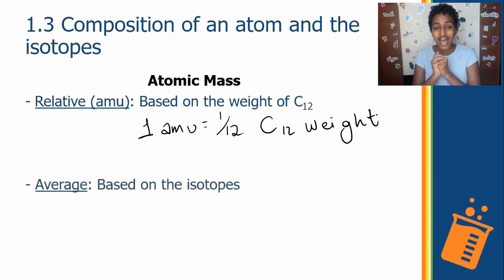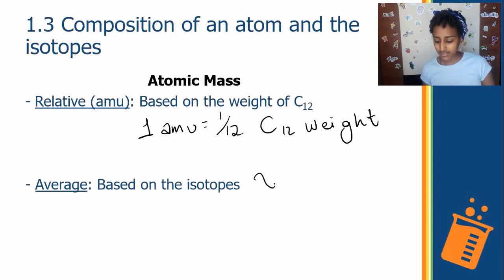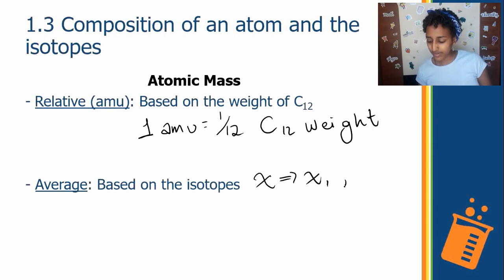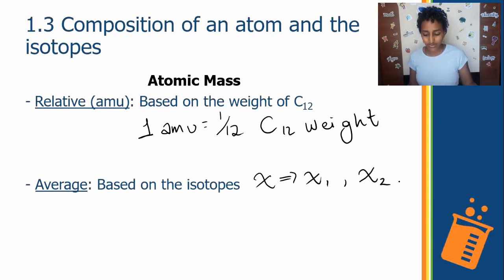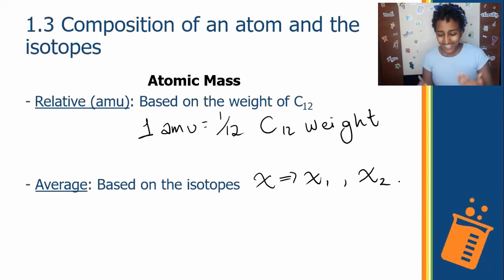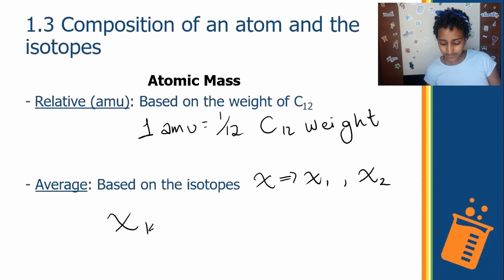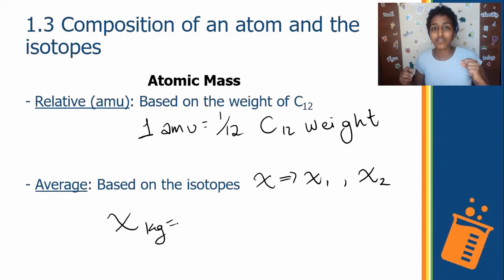Next, average atomic mass, which is based on isotopes. Say we have some element X with two isotopes — X1 and X2 — just as an example. To find the average weight of element X, we need to know the abundance of each isotope.